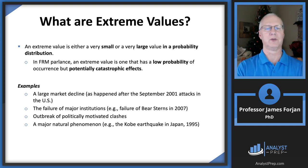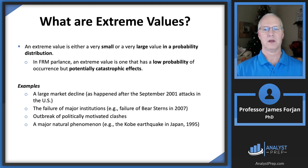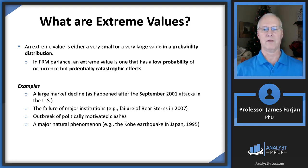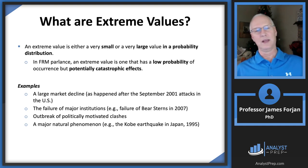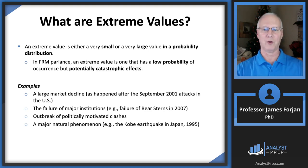What are extreme values? An extreme value is either very small or very large in a probability distribution — a low probability event with potentially catastrophic effects. Examples include September 11th, Bear Stearns and other institutional failures, outbreak of politically motivated clashes, and natural disasters like earthquakes. Think of extreme values as the results of these extreme events with very low probability of occurring.